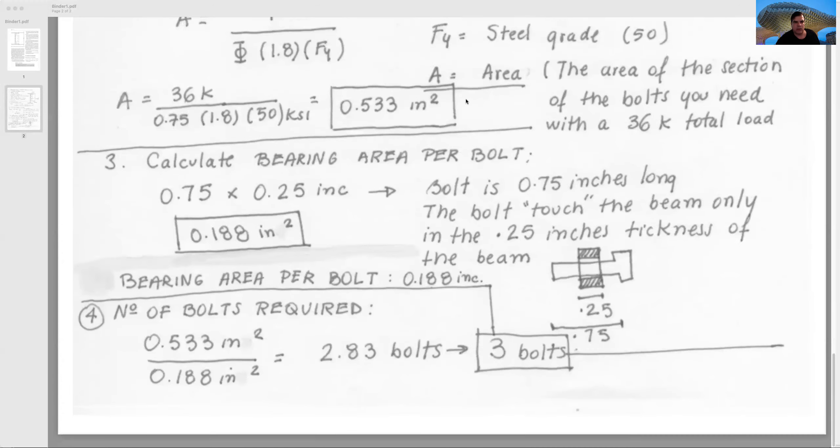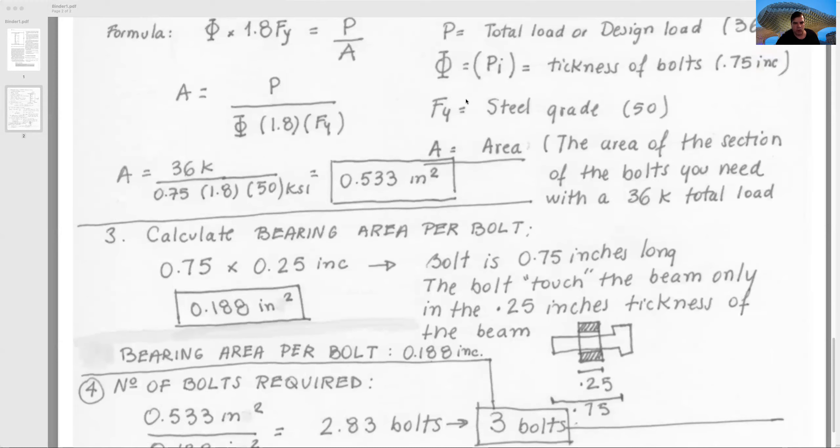Part number three: we calculate the bearing area per bolt. We have a bolt, and that bolt is supporting a specific bearing area. How much is the bearing area? I explained before we have the thickness of the web and a particular length of this material. The bolt will touch the beam only in the 0.25 inches thickness of the beam. When we multiply 0.75 by 0.25, we have this particular bearing area.